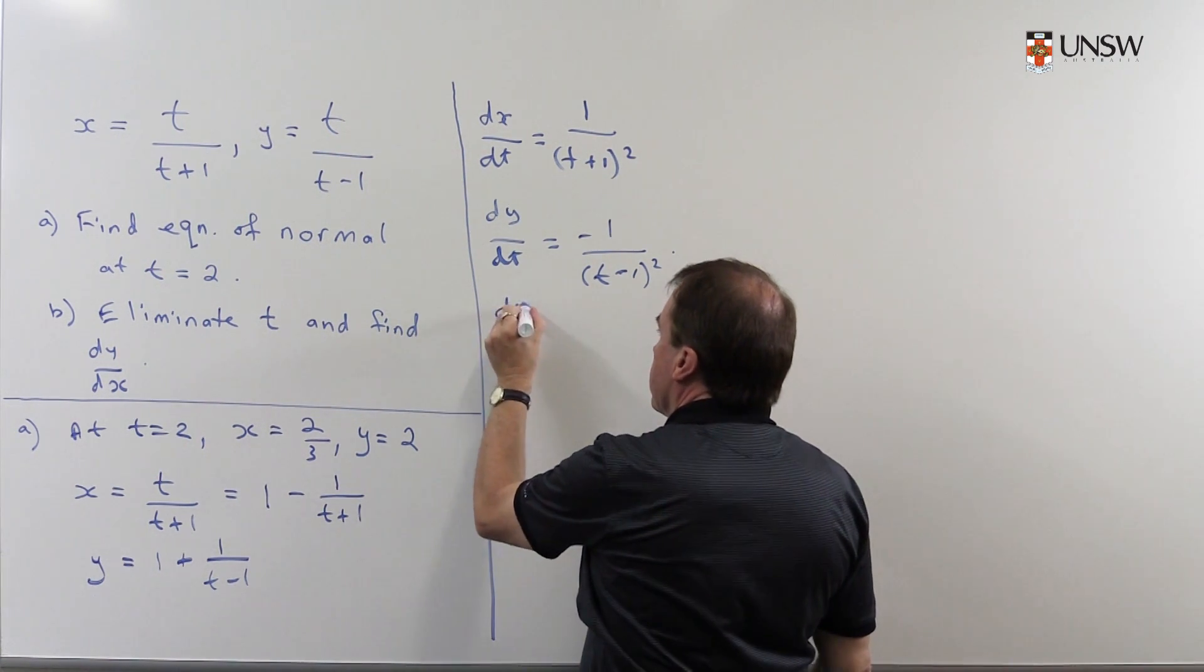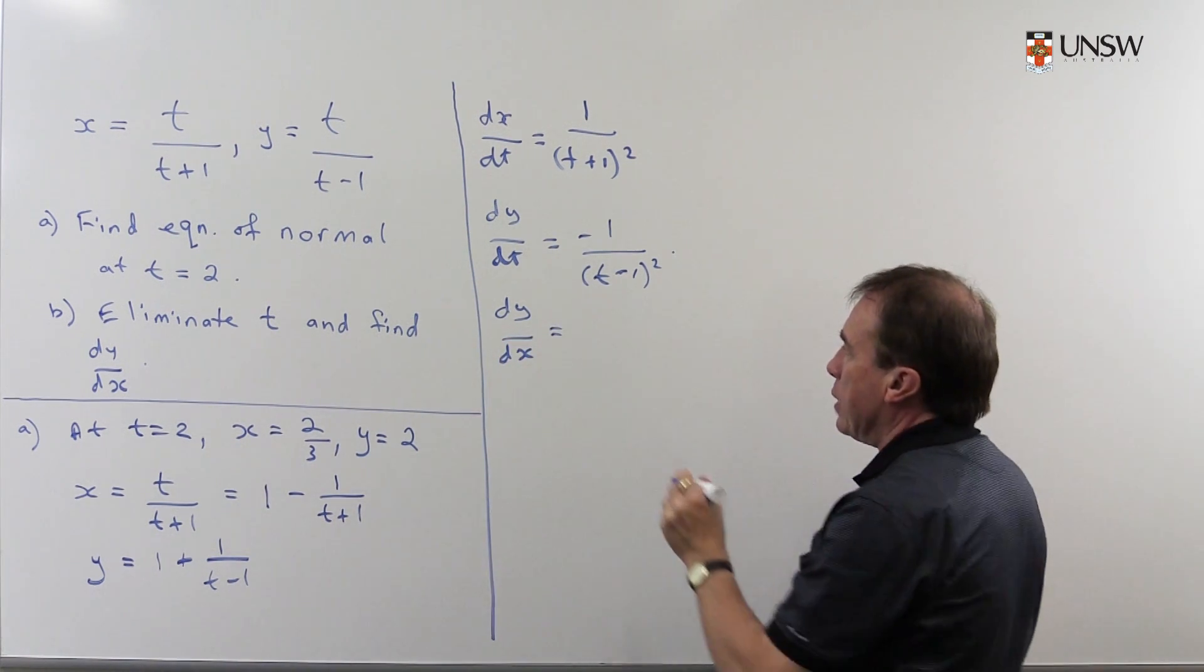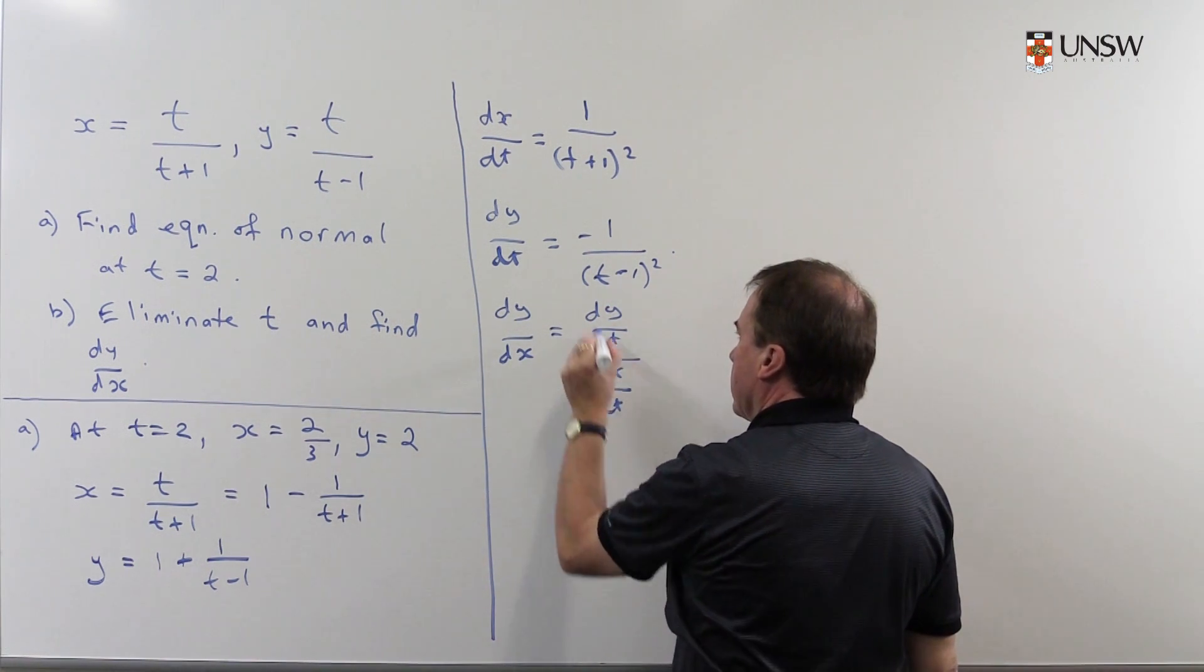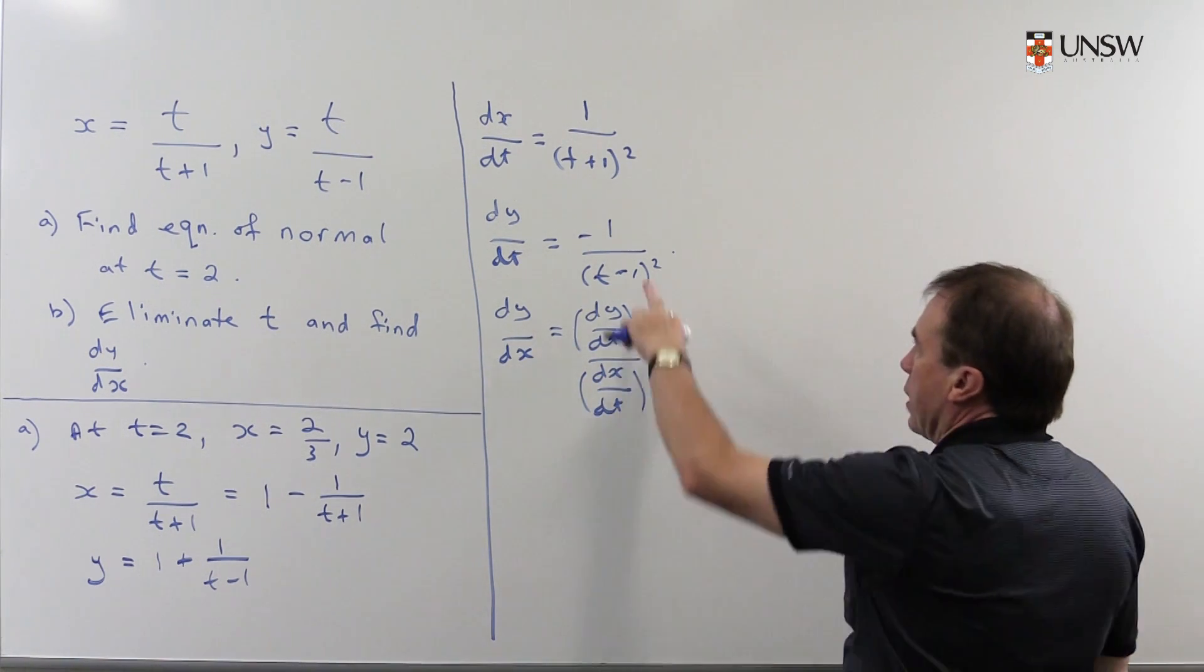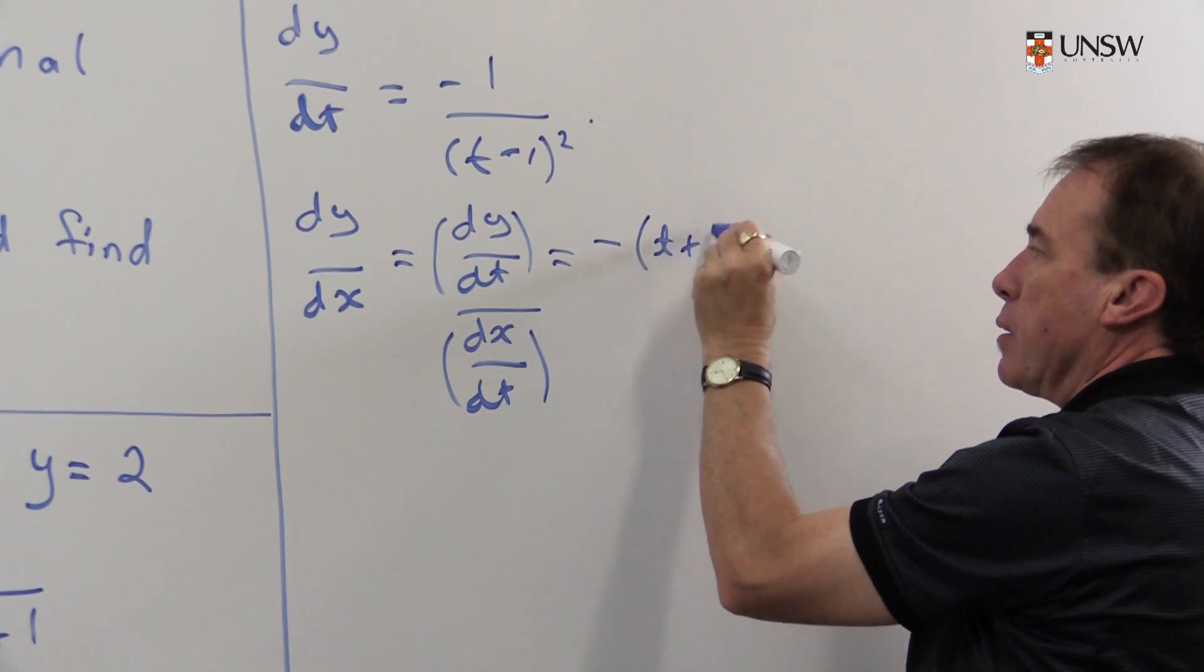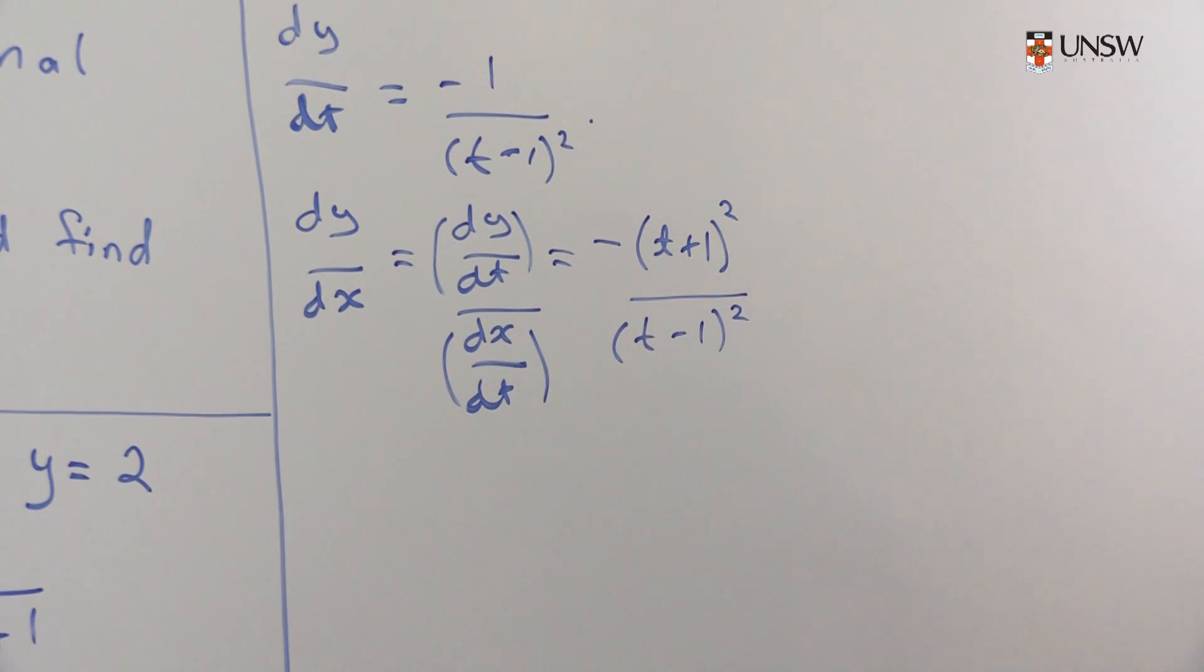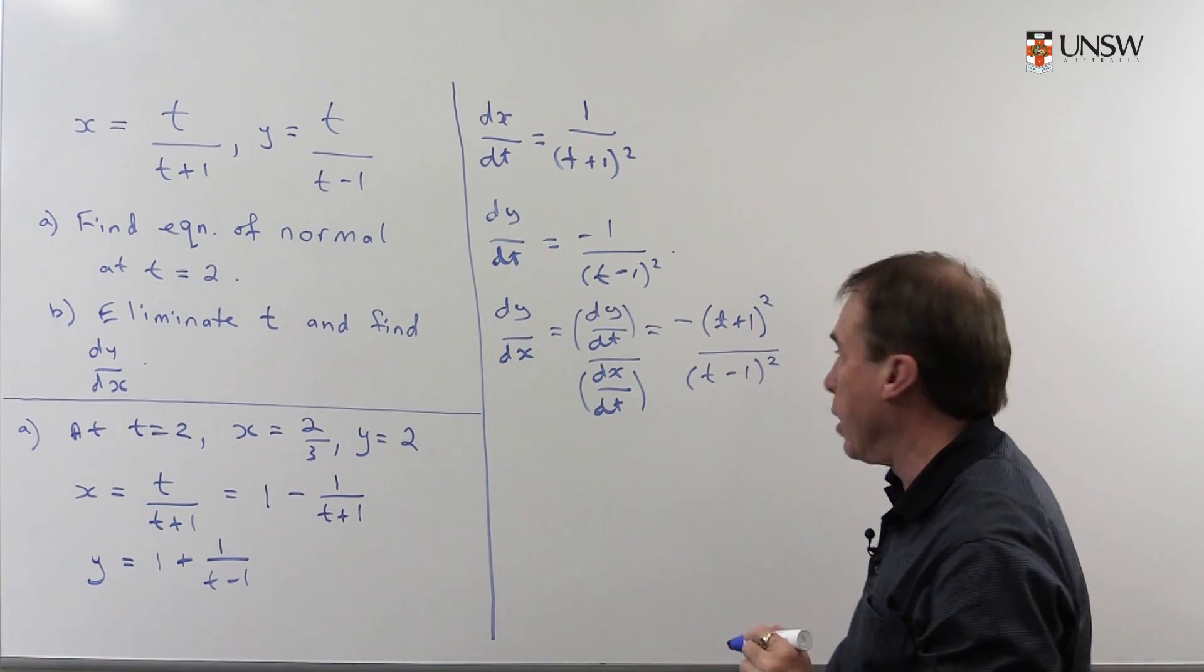And finally then, the derivative that I'm looking for, dy/dx parametrically, is going to be dy/dt divided by dx/dt. So I'm going to get that one divided by that and that will simply give me minus 1 on (t+1) squared on (t-1) squared. So I'm taking this one here divided by that so I can invert and multiply.